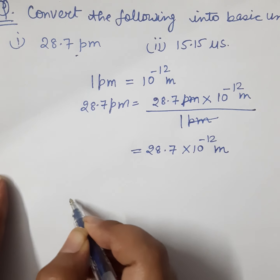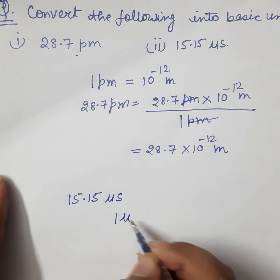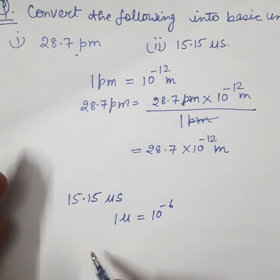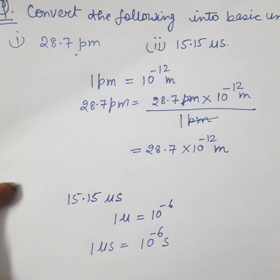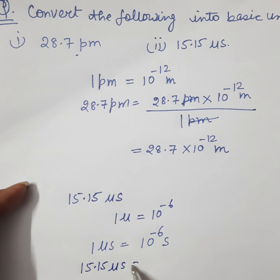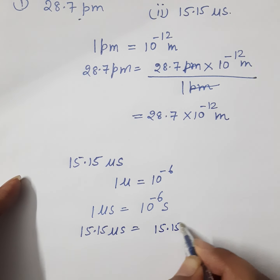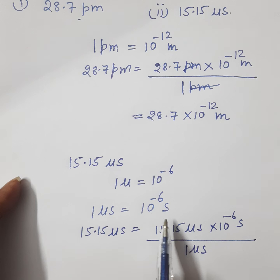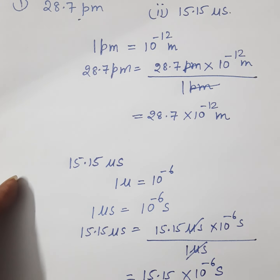The second example is 15.15 microseconds. From the table, 1 micro equals 10⁻⁶. So 1 microsecond equals 10⁻⁶ seconds. For 15.15 microseconds: multiply 15.15 microseconds by 10⁻⁶ second divided by 1 microsecond. The microseconds cancel out, leaving 15.15 × 10⁻⁶ seconds.